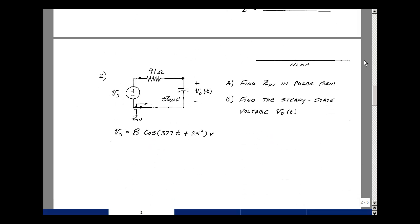The second problem is given this RC circuit, can you find the input impedance, Zn, in polar form? And then can you find the voltage V out of t in steady state, given the input is 8 times the cosine of 377t plus 25 degrees.